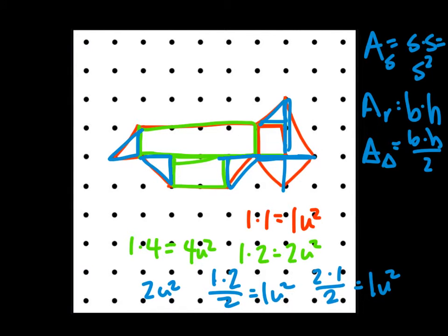So adding all of this up, we can say we have one unit plus four units equals five, plus two is seven, plus two more is nine, plus one more is ten, and one more is eleven. So the area of this shape is eleven units squared.